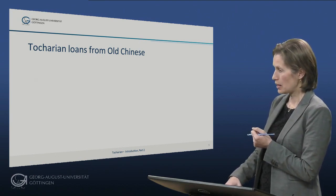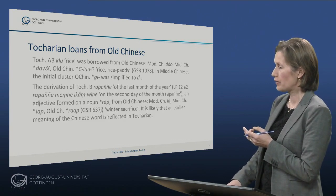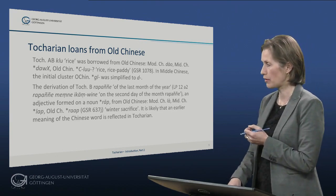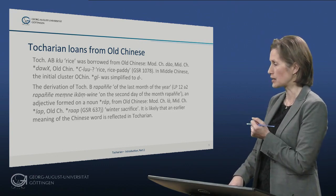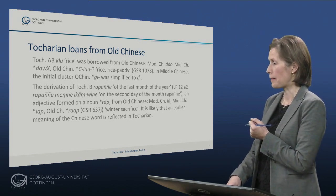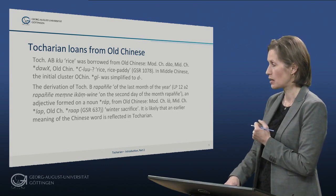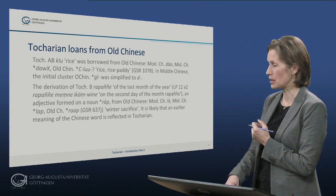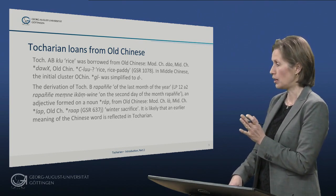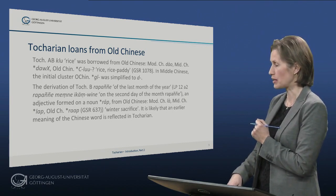In Tocharian A and B the word for rice is 'klu'. Then we have the Tocharian B word for the last month of the year, corresponding to something like December, which is 'rapanje' in Tocharian B. It is also borrowed from Old Chinese, where it means winter sacrifice — a specific type of holiday in early Chinese which came to be the name of the last month of the year in Tocharian.